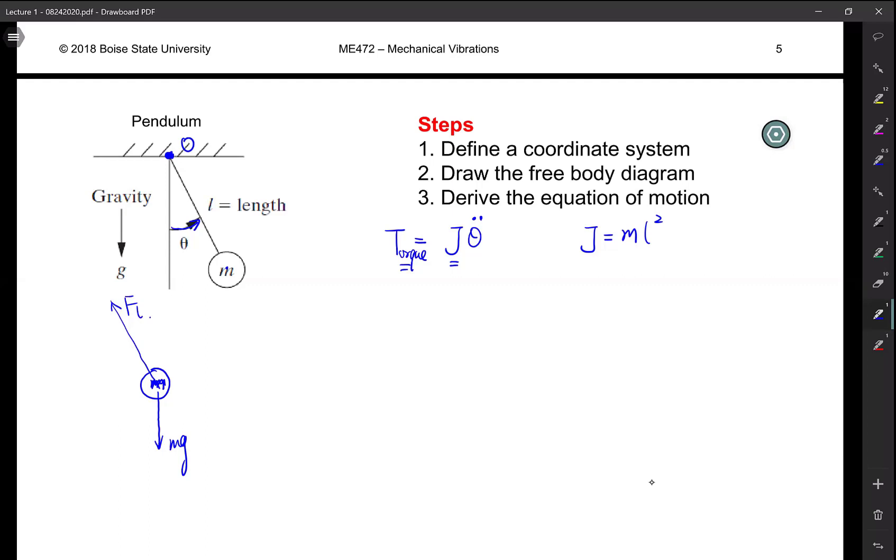As you can see, your FL, because it passes through this point O, means the tension force is not going to create any torque.